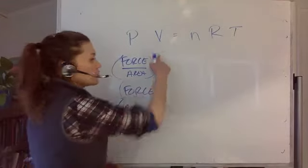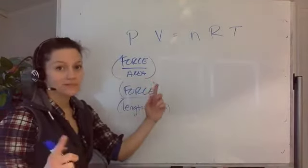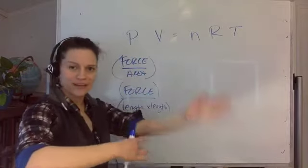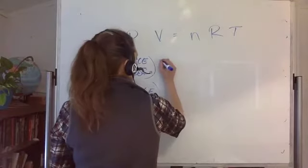Next, volume. What is a volume? Length times width times some sort of depth. Okay. So length times length times a length. So let's say length.